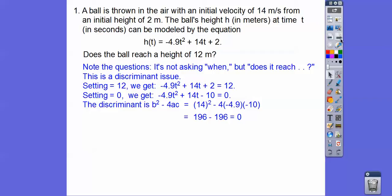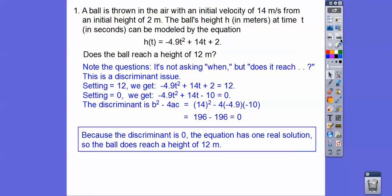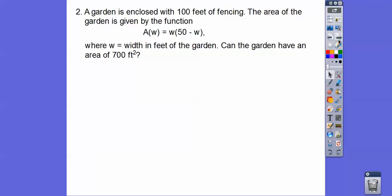So if you can remember back in the last lesson of discriminants, when it equals 0, that tells us that the equation has one real solution. So does the ball reach 12 feet high? Yes, in one spot it does. And remember, it's just asking, does the ball reach 12 meters high? Yes, in one spot it does because it equals 0. So there's one solution.